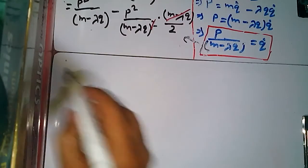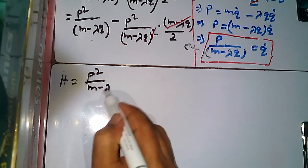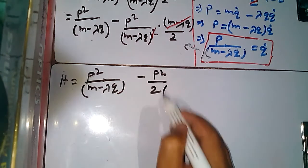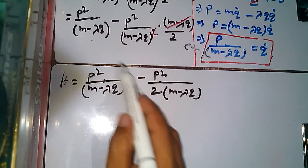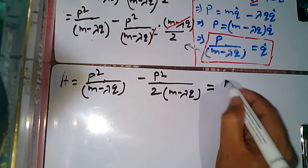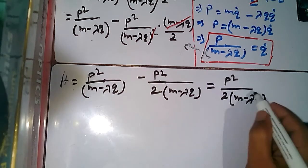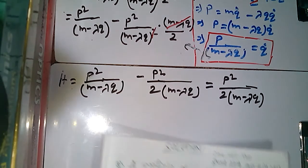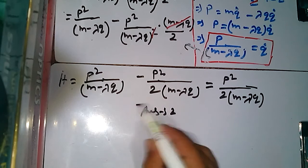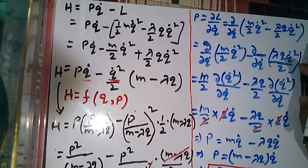Subtracting the two terms: p²/(m - λq) - p²/[2(m - λq)] = p²/[2(m - λq)]. Therefore the Hamiltonian is H = p²/[2(m - λq)]. This matches answer option 2, so the answer is 2. Thank you.